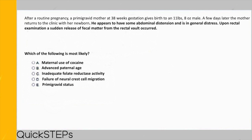He appears to have some abdominal distension and is in general distress. Upon rectal examination, a sudden release of fecal matter from the rectal vault occurred. Which of the following is most likely? From what the question stem gave us, we are already able to figure out the most probable diagnosis. Specifically the part about the sudden release of fecal matter — that's the squirt sign, which is hallmark for Hirschsprung's disease.